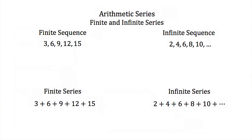There are two different types of arithmetic series: finite and infinite arithmetic series. A finite sequence is when we have a sequence of numbers, like an arithmetic sequence, but there is a final number or final term in that sequence. In this example we have 3, 6, 9, 12, and 15. These all increase through an addition of 3, over and over again, but our sequence ends at 15. If we were to turn this into a series, it would look like 3 plus 6 plus 9 plus 12 plus 15, but 15 is the final term. So this is a finite series.